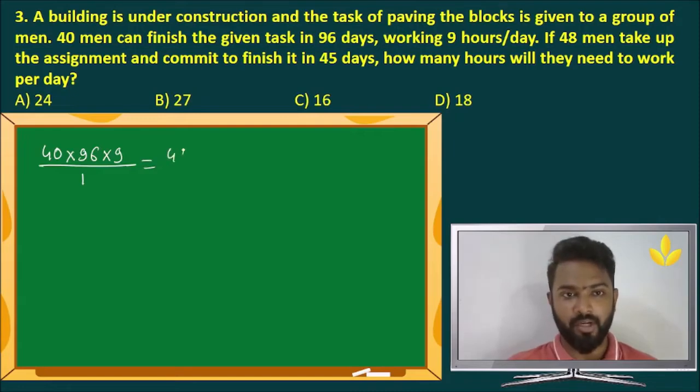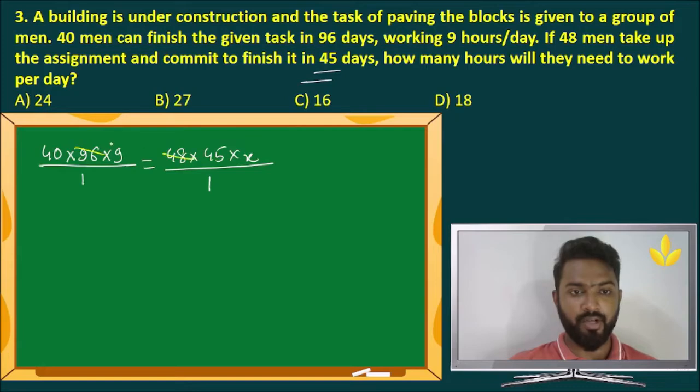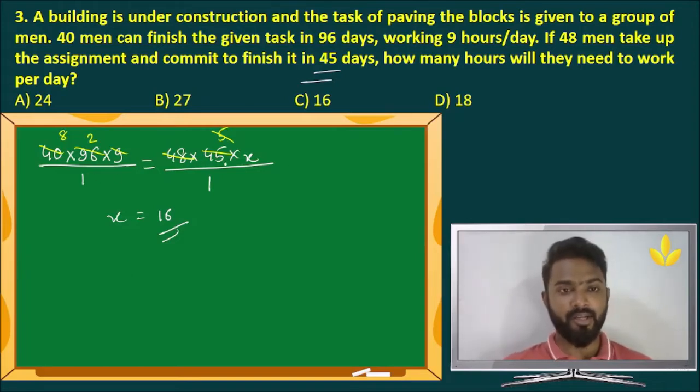We have 48 men now, 48 men, they finish the work in 45 days. But how many hours per day, that is the question, divide by 1, the same work. Let us cancel things out and we will get the answer. 96 by 48 is 2, 9 fives are 45, 5 eights are 40. So x equals 16, 8 into 2 is 16, that's it done. So just remember when it comes to T1 and T2, just days is not always there. Sometimes they give you the hours per day and all that. So answer accordingly.